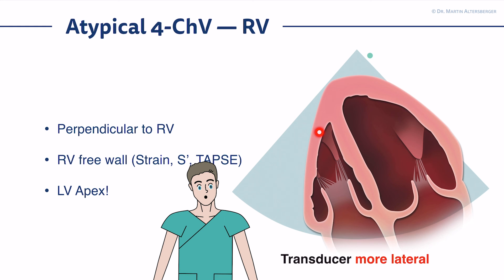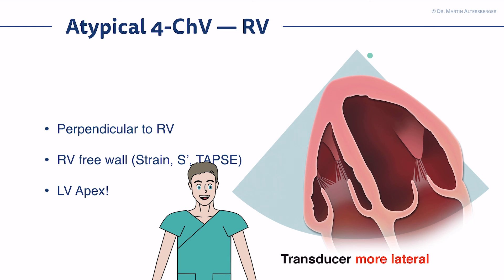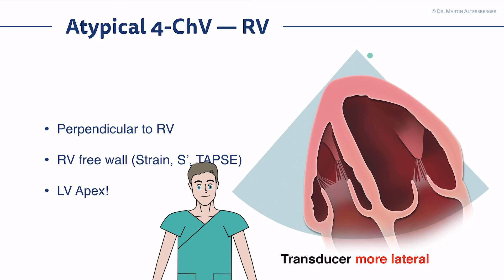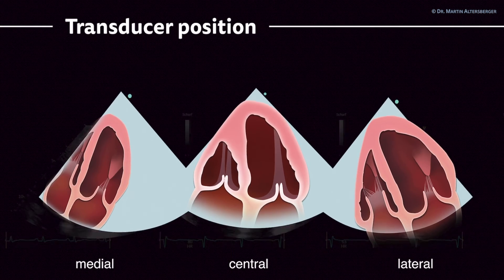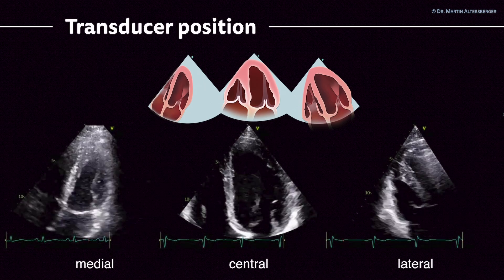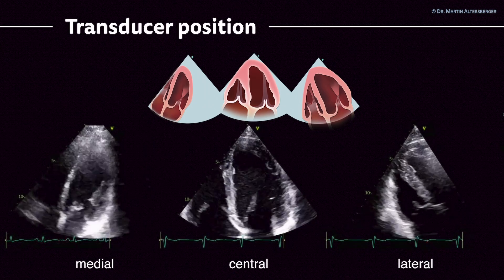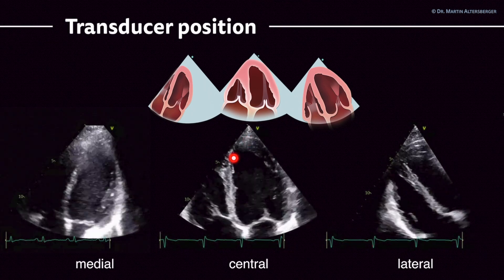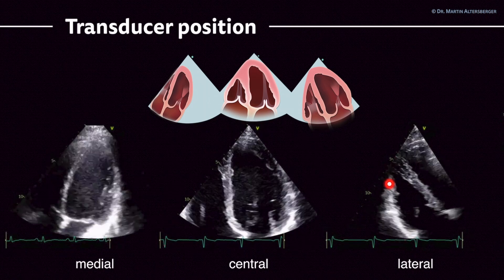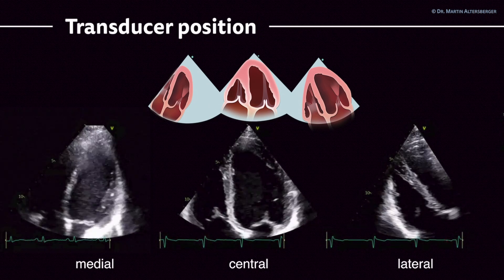Here you see the right ventricle and the left ventricle apex. You should focus on those regions to truly delineate and depict the RV free wall to measure the strain, the S-prime, and of course the TAPSE. Here are examples showing various transducer positions: the more medial view where you see the anterolateral wall, the traditional four-chamber view, and the focused view of the right ventricle where you see the free wall of the RV.